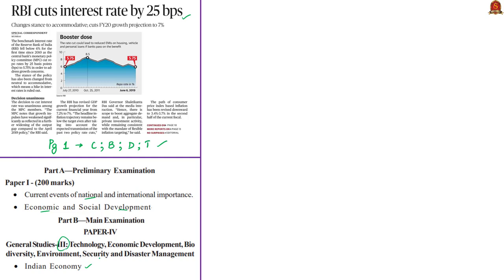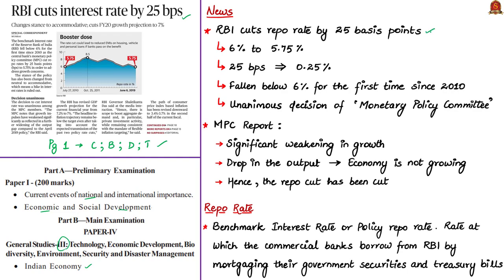The Reserve Bank of India, which is the Central Bank of India, has cut the repo rate by 25 basis points from 6% to 5.75%. Note that 25 basis points means 0.25%. Basis points is a term generally used in economics. This repo rate is the benchmark interest rate of the Reserve Bank of India. This benchmark interest rate has fallen below 6% for the first time since 2010.